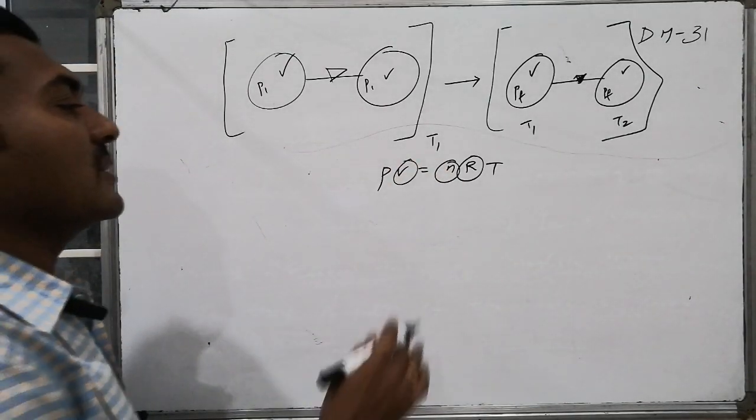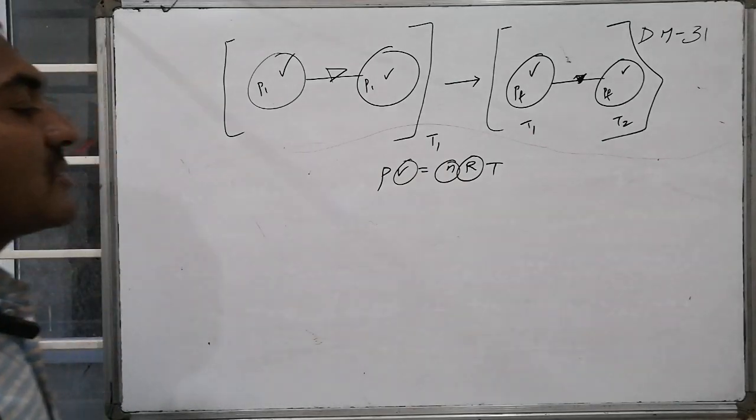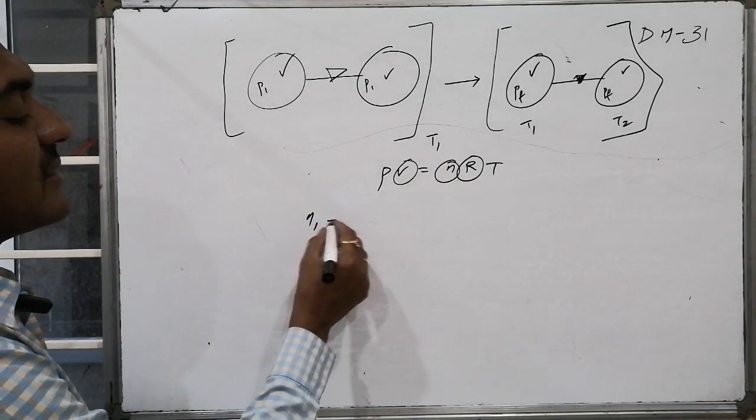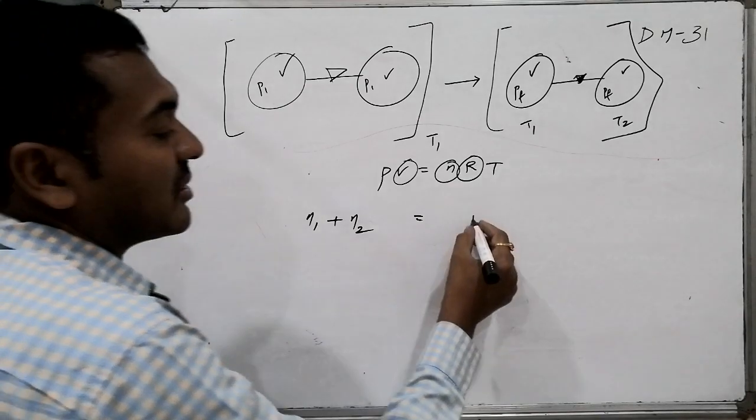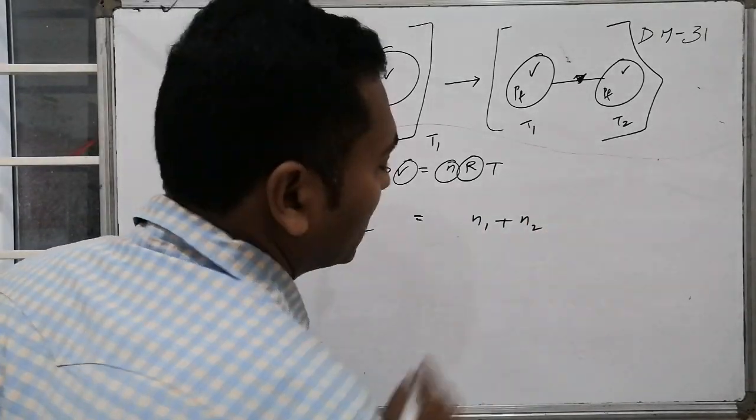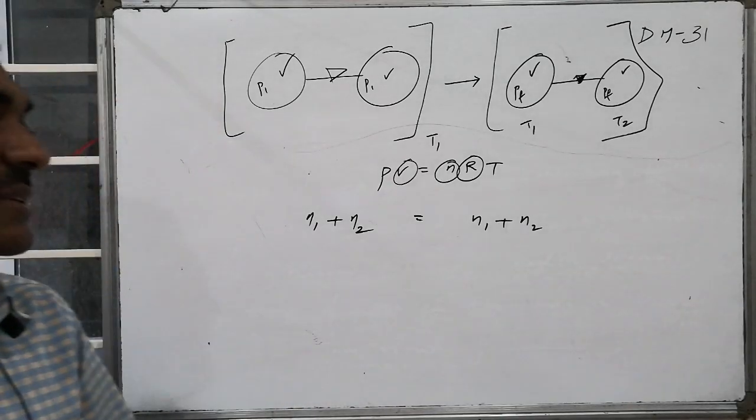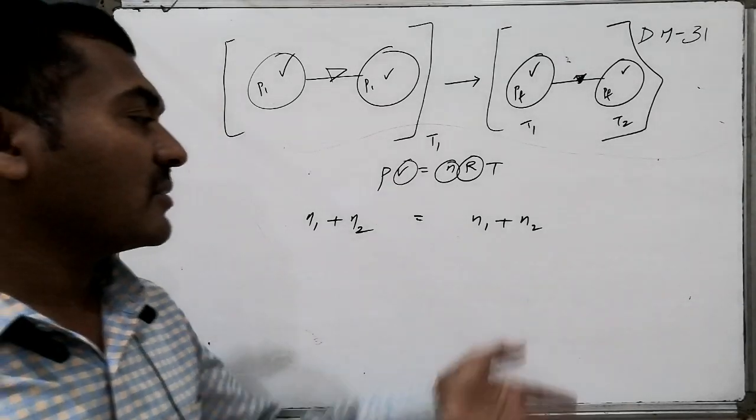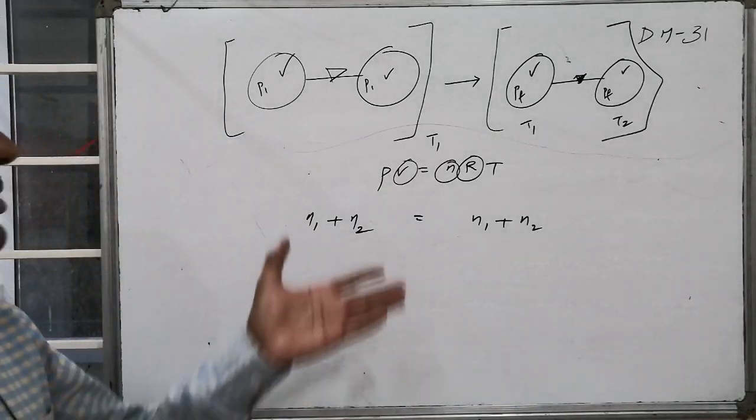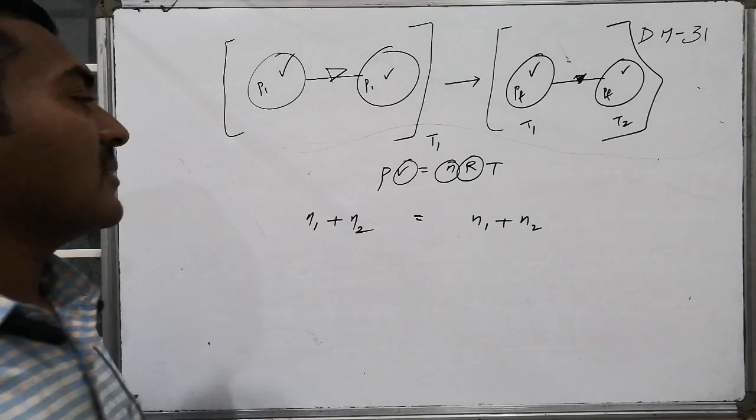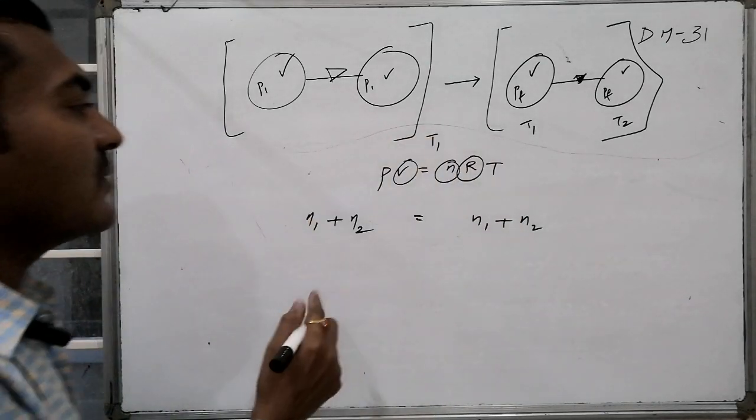N1 plus N2 initial equals N1 plus N2 final, because the total quantity of substance from beginning to end remains the same - no substance is added or removed.